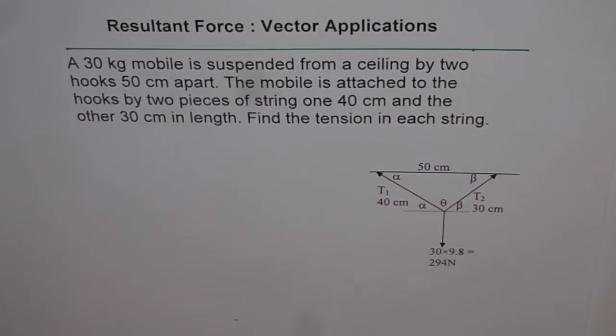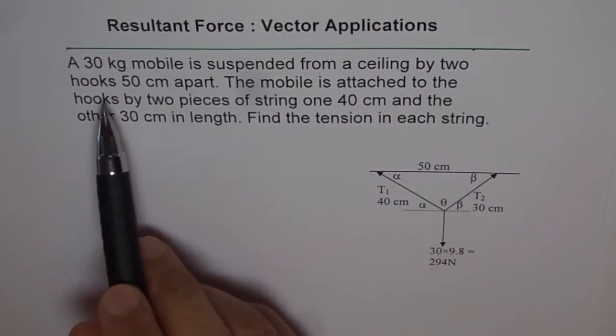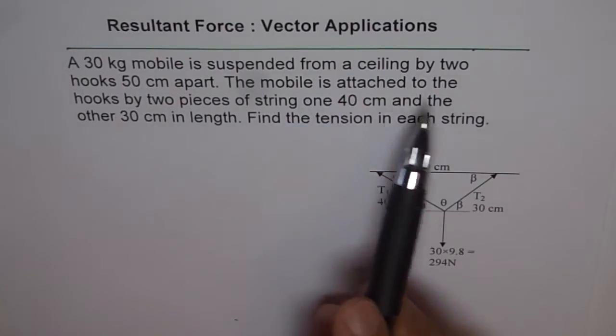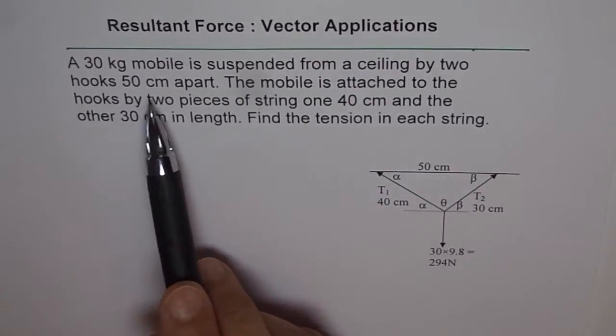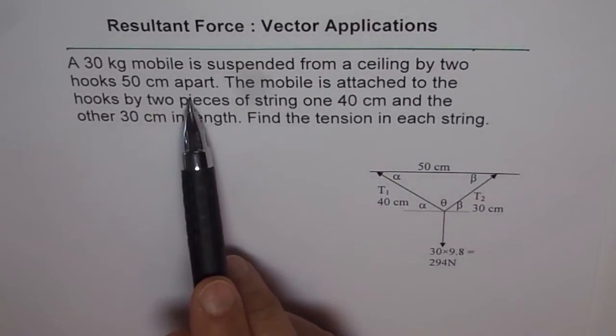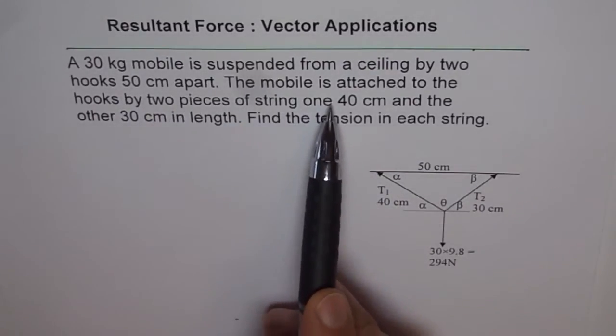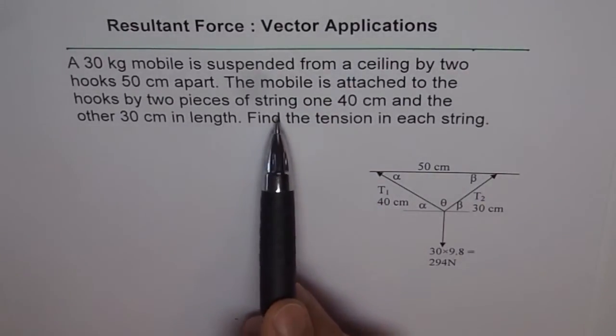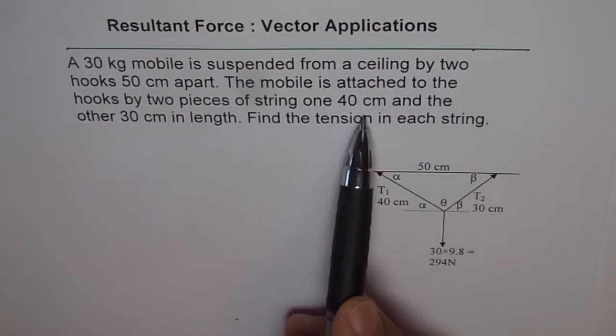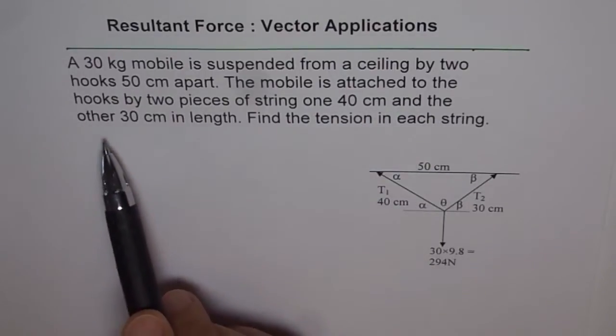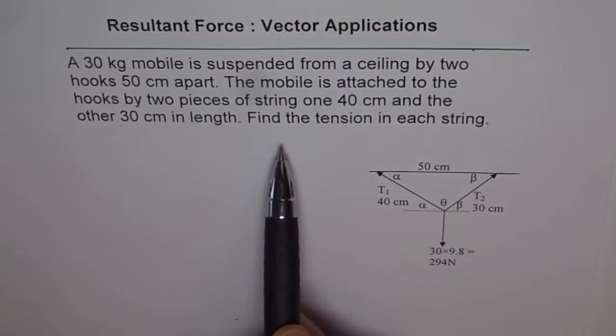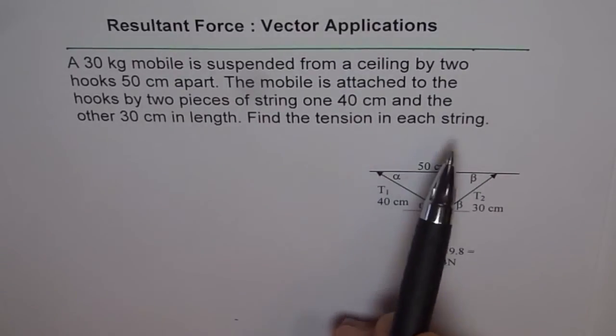Resultant Force Vector Applications. A 30 kg mobile is suspended from a ceiling by two hooks 50 cm apart. Find the tension in each string.